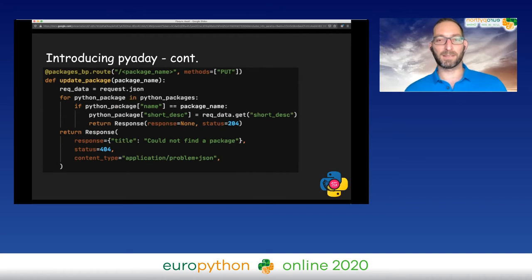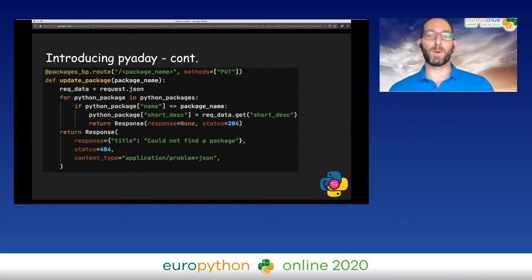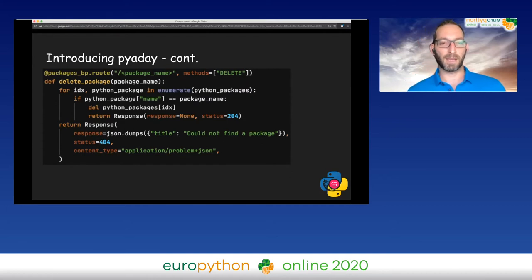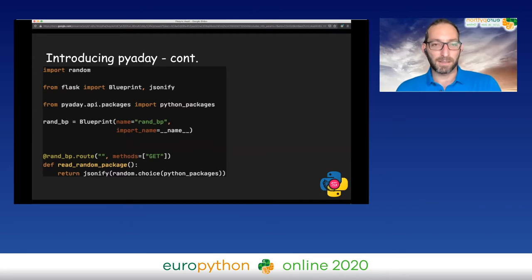Moving on to the U, the update — here you can see a PUT method. It can also be a PATCH method, depending on what you do. We search for the package in our database, and if we find it, we update it and return a 204 status code. Otherwise, we return a 404. The DELETE method again gets the package name as input. If it finds it in the database, it deletes it and returns a 204 status code. Otherwise, it returns a 404.